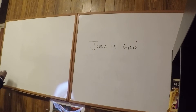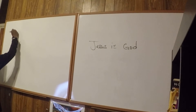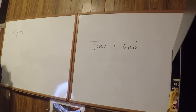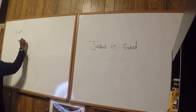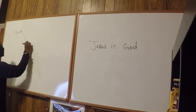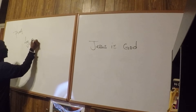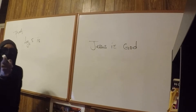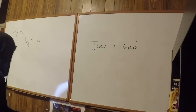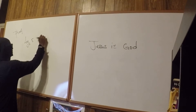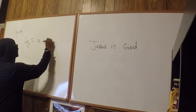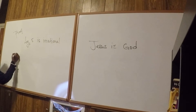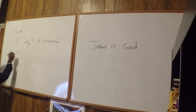So what we want to do is a proof, and the proof is of the fact that log base 2 of 5 is irrational. It's irrational — and the proof is really cool, so here it goes.